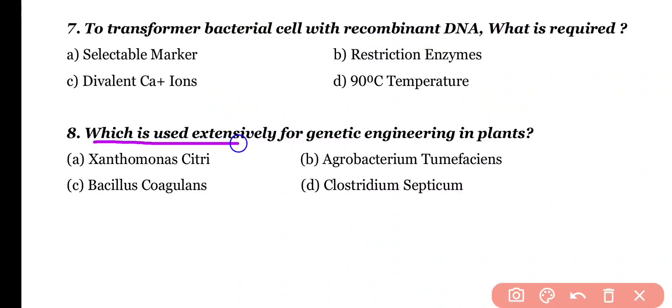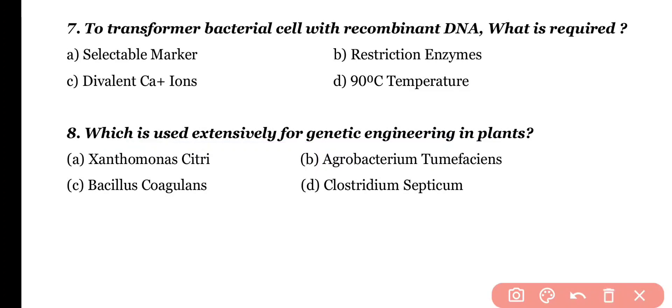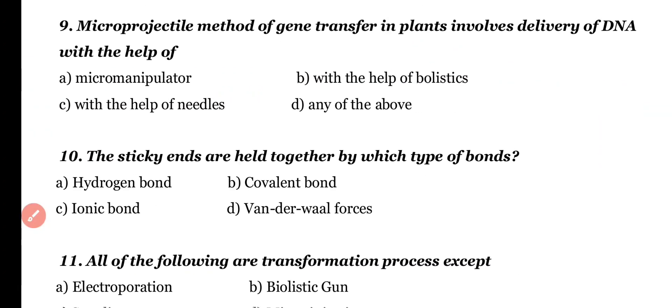Question 8. Which is used extensively for genetic engineering in plants? Xanthomonas citri, Agrobacterium tumefaciens, Bacillus coagulans, or Clostridium spectrum? Correct answer is option B. Agrobacterium tumefaciens contains Ti plasmid and it is a natural genetic engineer in the case of plants.